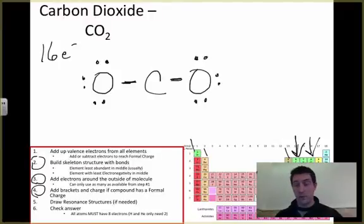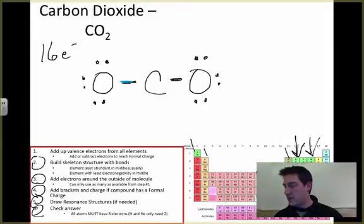I do not have a formal charge, so I don't need to do that. Resonance structures, not sure about that one yet. Go ahead and check my answer. All of them should have 8 electrons around the outside edge. This oxygen has 2, 3, 4, 5, 6, 7, 8. This oxygen has 2, 3, 4, 5, 6, 7, 8. This carbon has 2, 4. So I must not be done because this carbon is not happy.